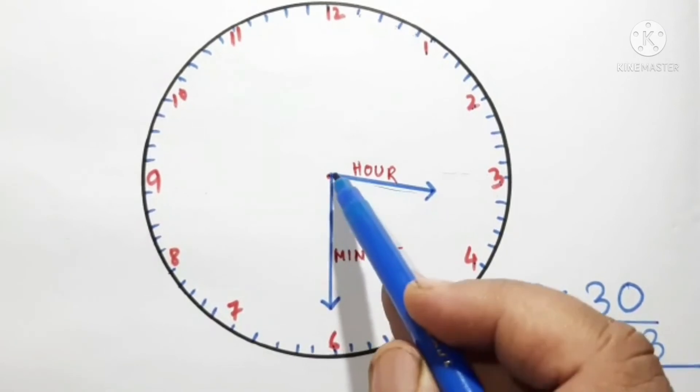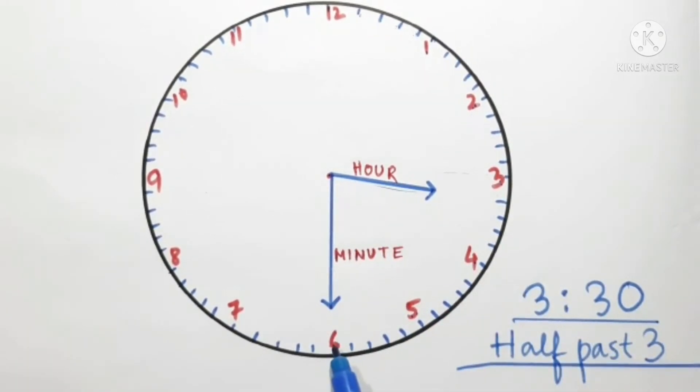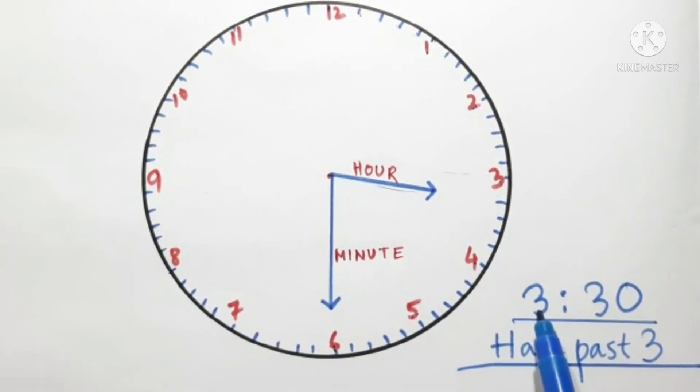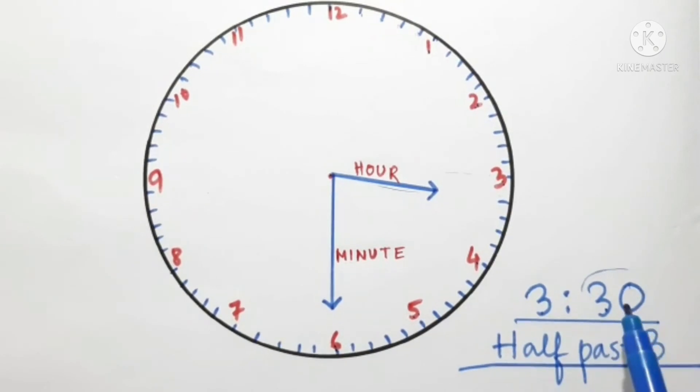So right now, this minute hand is at 30. 6 means 30 minutes. So my time will be 3 hours, 30 minutes. Now, when it is 30, we can also write as half past 3.